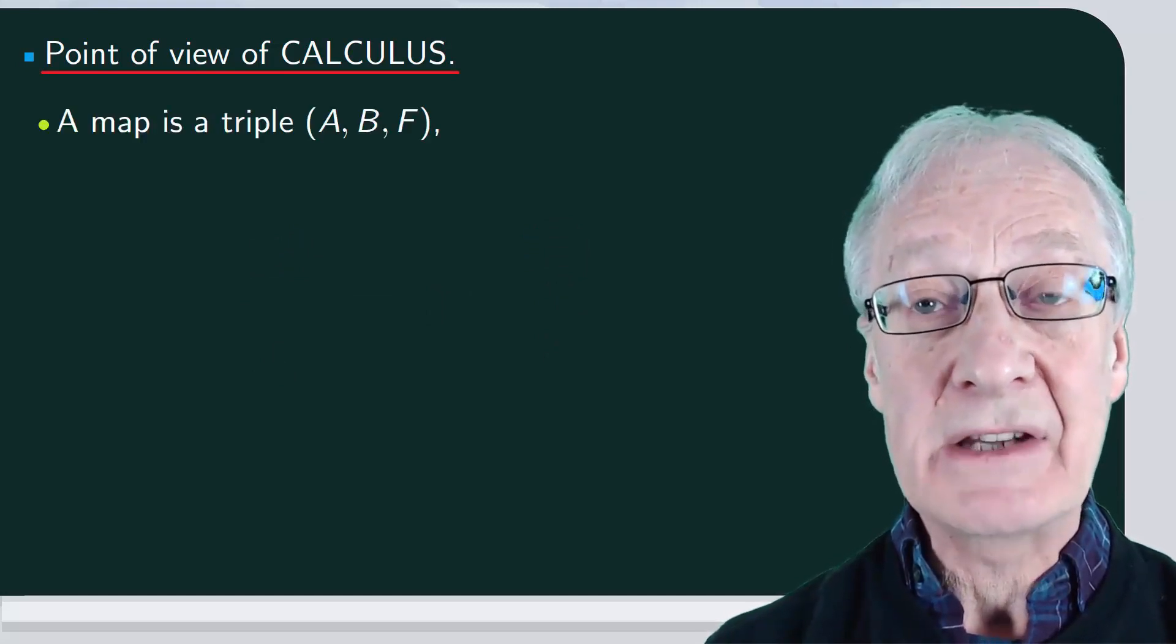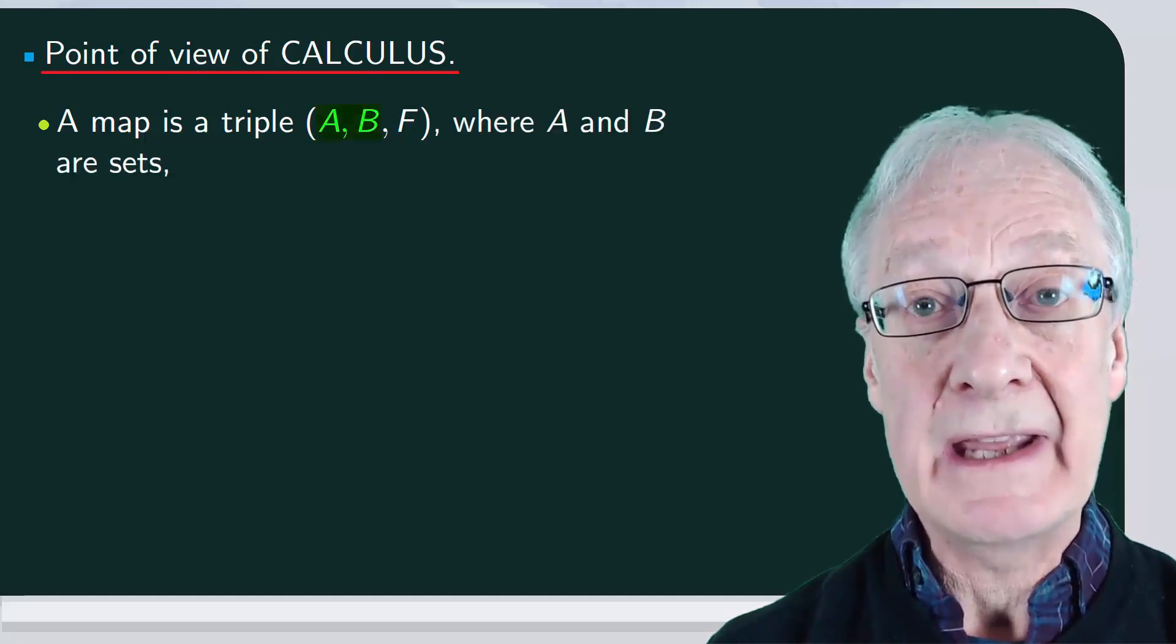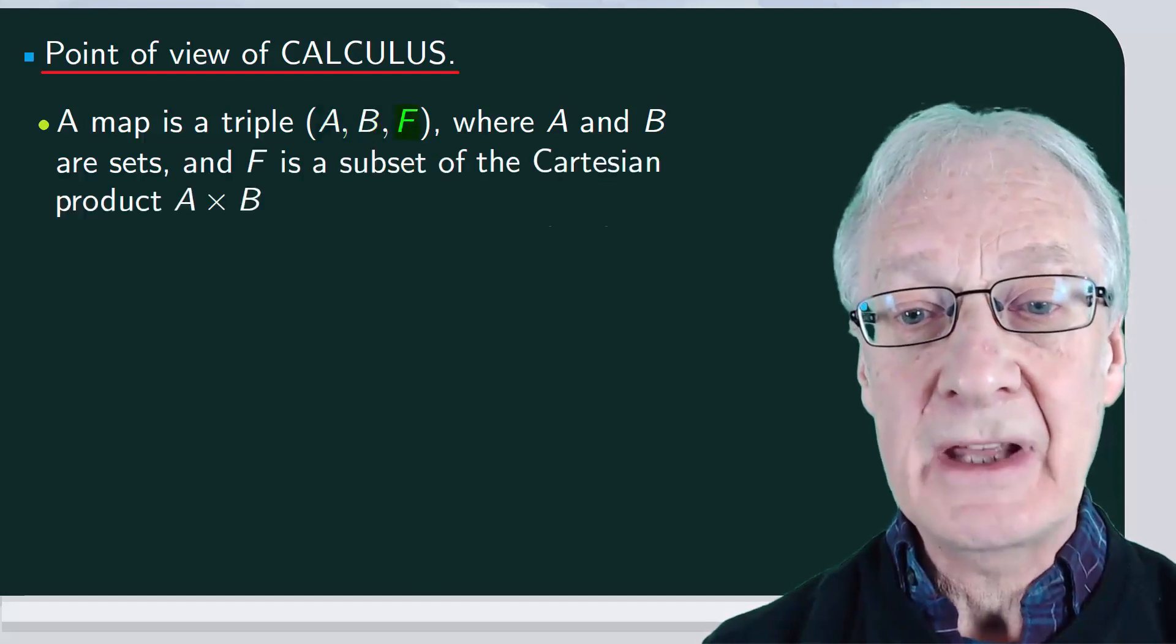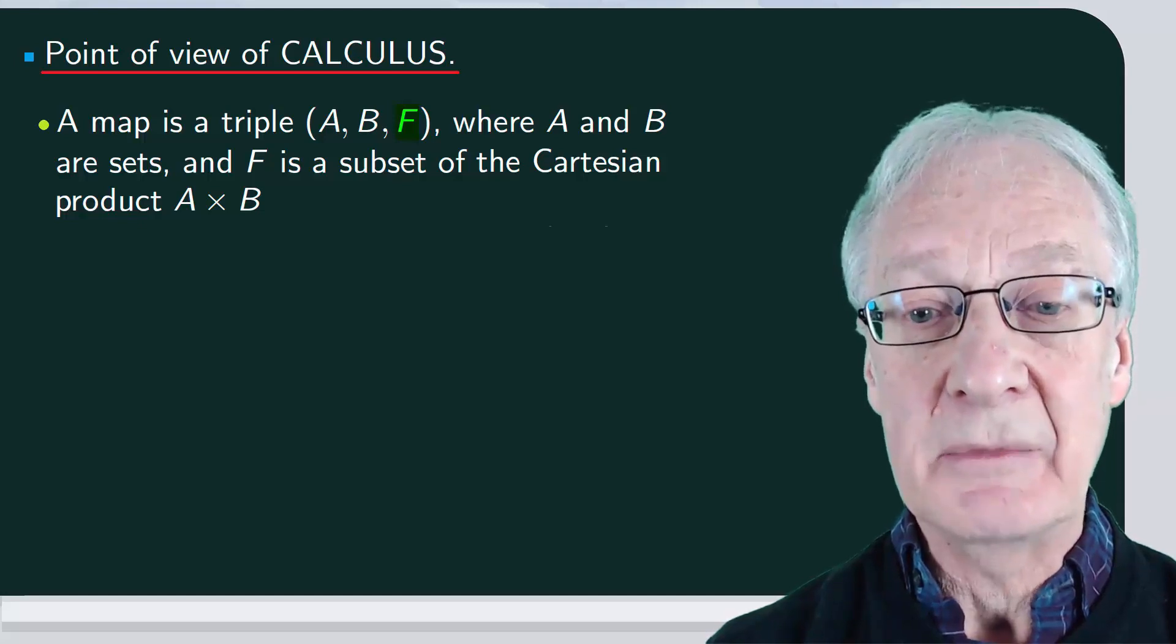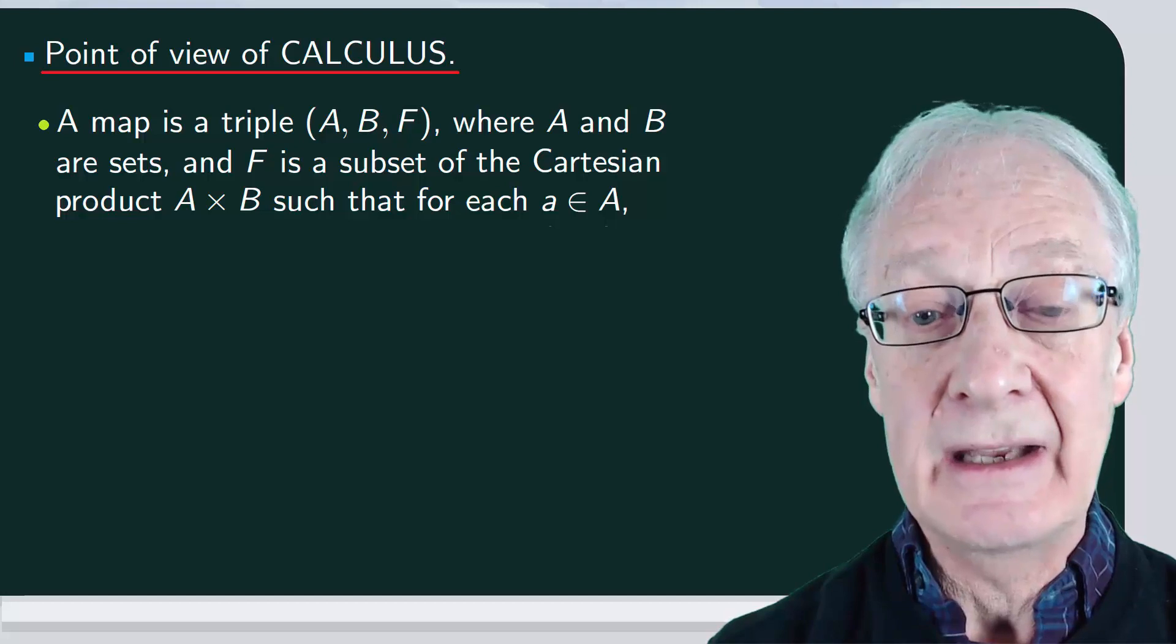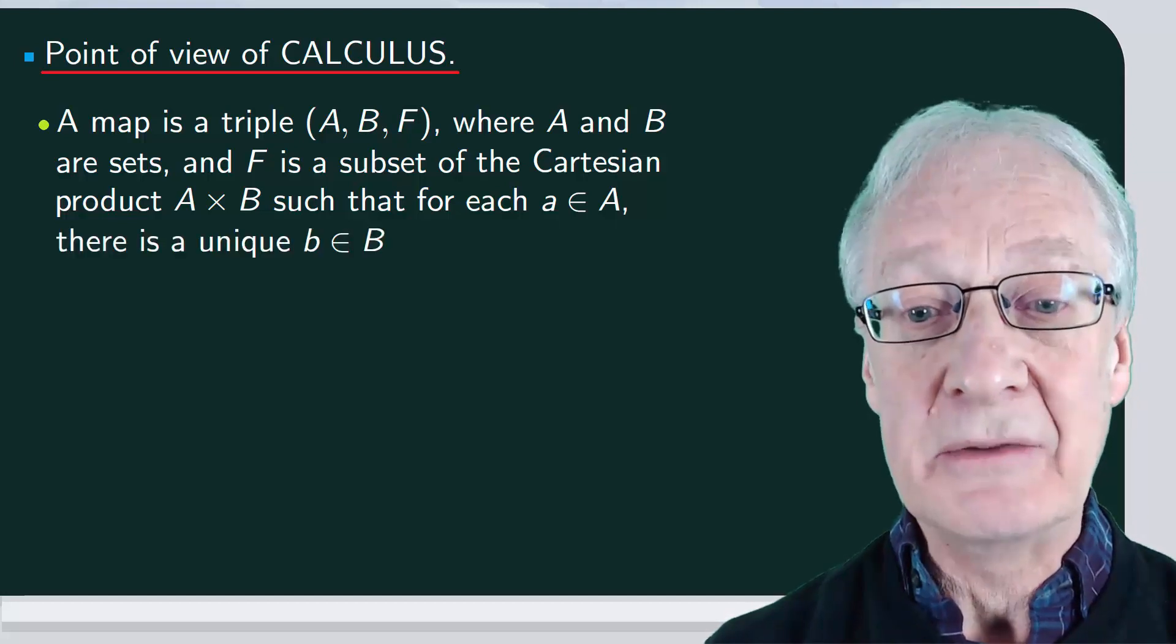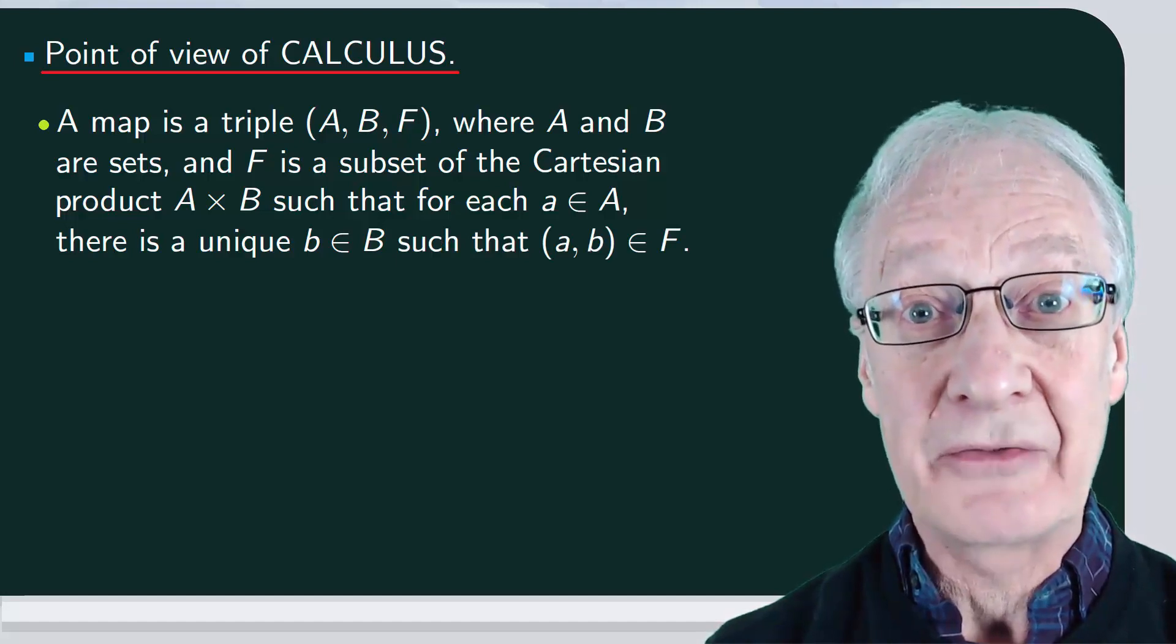A map is a triple, three things: a, b, f, where a and b are sets, the domain and the codomain, and f is a subset of the Cartesian product a times b, such that for each small a in a, there's a unique small b belonging to b, such that a, b belongs to f.